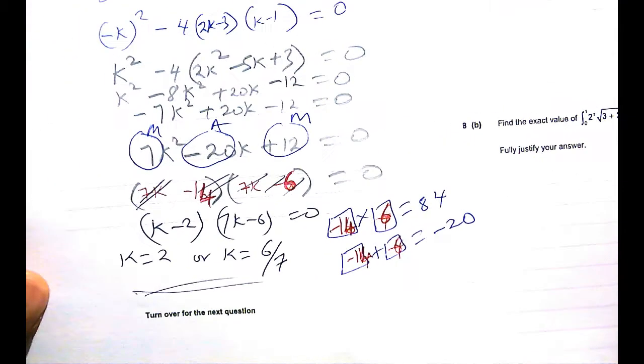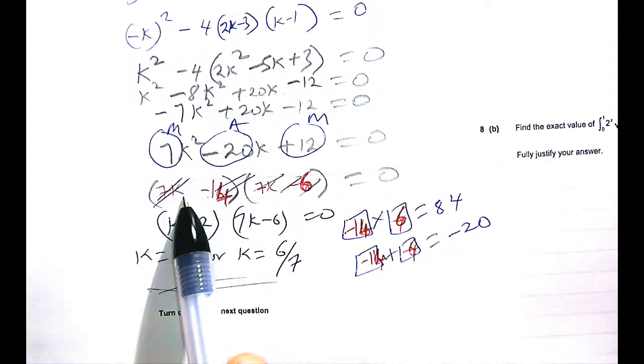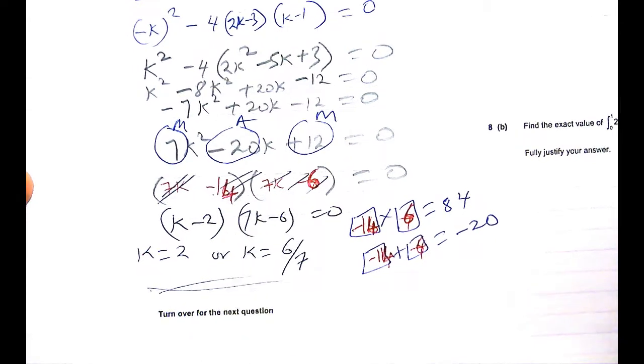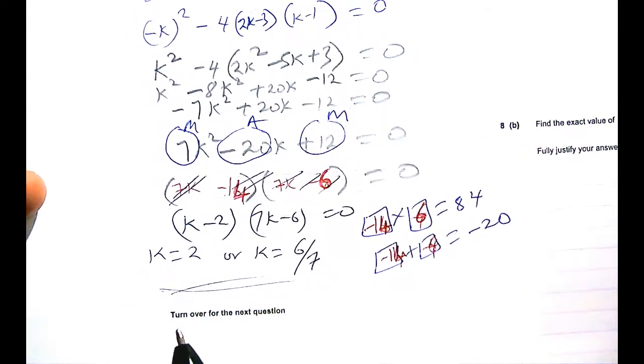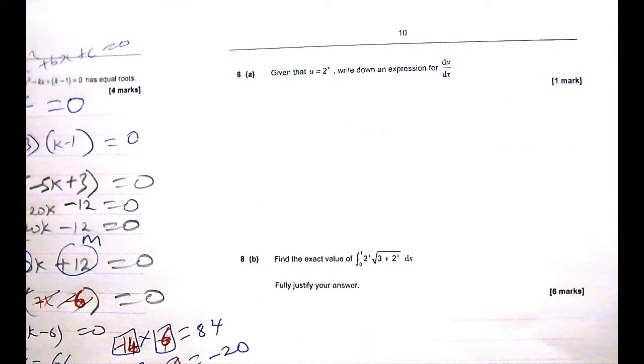Funny enough, you'll notice that because you're only trying to solve for k, even if you are stuck with 7k minus 14 is the solution, you'll find out that k will still be 2 because 14 over 7 is just 2. Alright. Okay. Alright. The next question is question 8a.